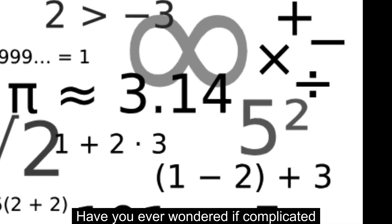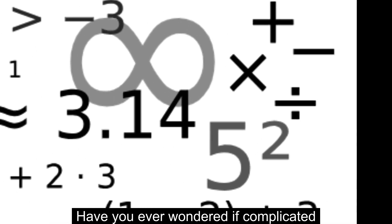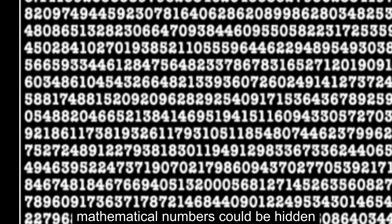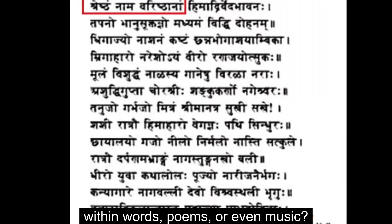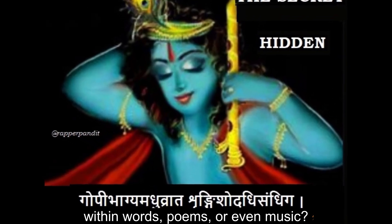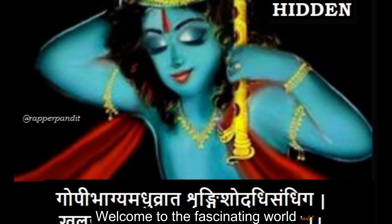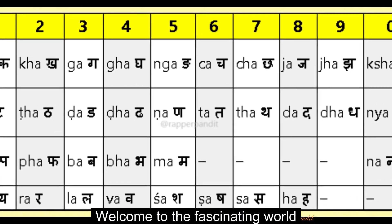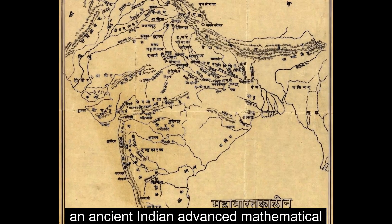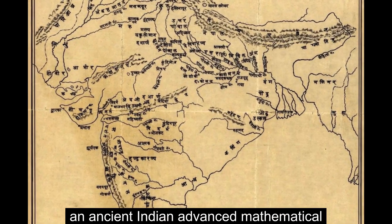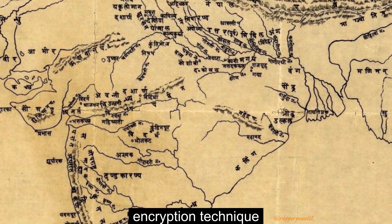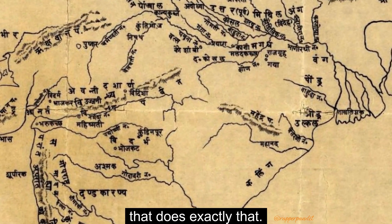Have you ever wondered if complicated mathematical numbers could be hidden within words, poems, or even music? Welcome to the fascinating world of the Kathapayadi system, an ancient Indian advanced mathematical encryption technique that does exactly that.